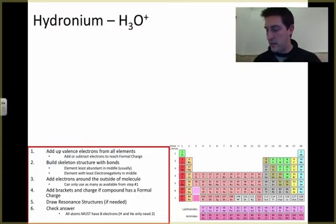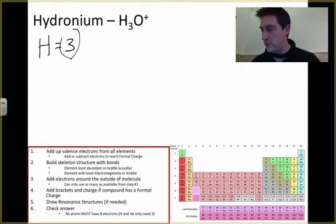I'll go through here pretty quickly. If you need to slow it down, go ahead. I add them up. I've got hydrogen - I've got three of those hydrogens. And I know that hydrogen has one valence electron.